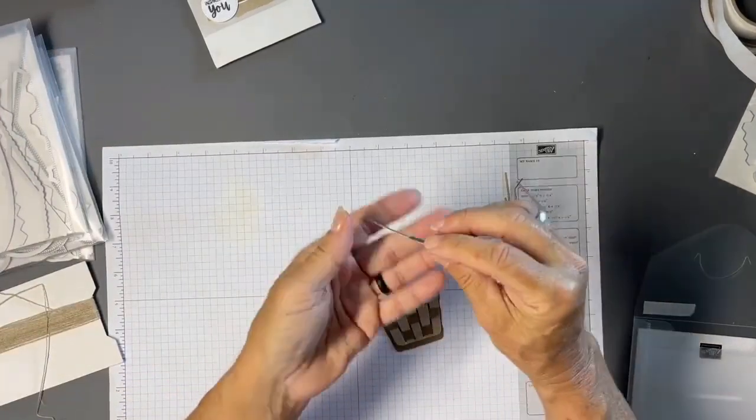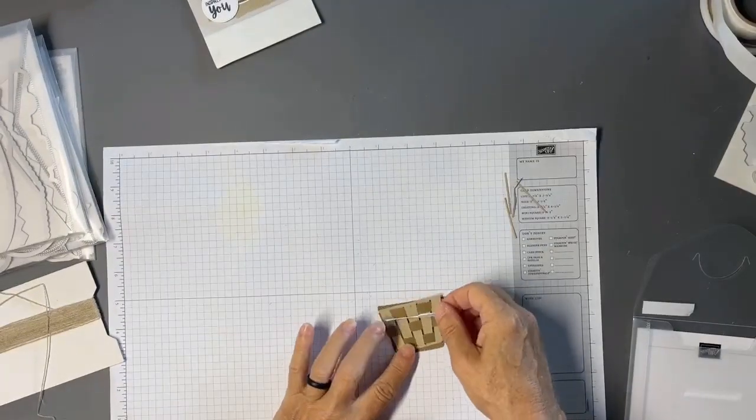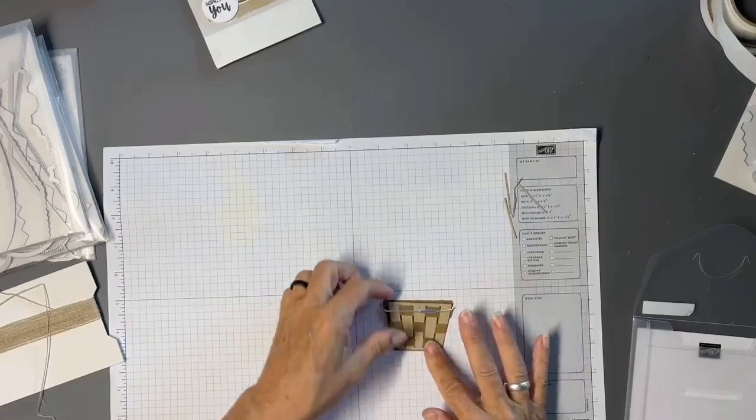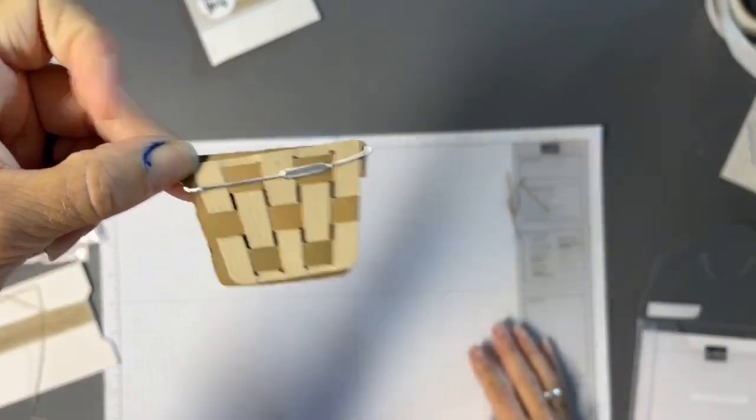Then you're going to adhere that and you've got your three-dimensional basket. How fun is that? And then the other piece that you'd want to add, we have this little handle and I cut mine out of silver, so using some liquid glue you can now go ahead and add a handle, nice and easy, to your bushel basket. So lots of possibilities with that.